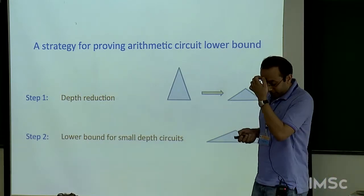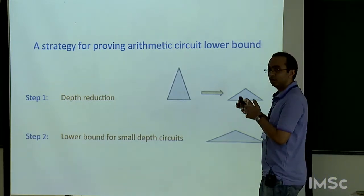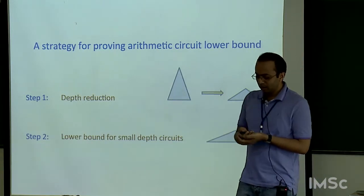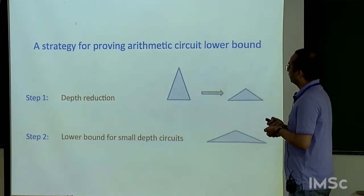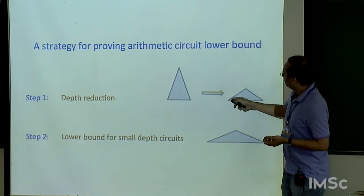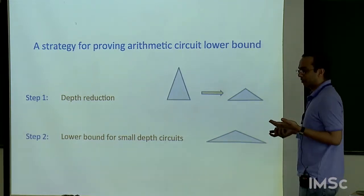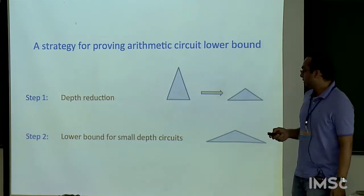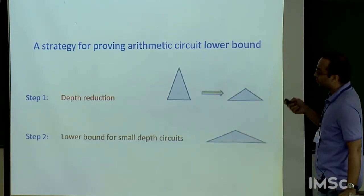All three morning speakers sketched the general strategy of proving lower bounds, but this is not the only strategy. Others include identity testing, the tau conjecture, and geometric complexity theory via representation theory. The main approach is: compress the circuit to a small depth circuit without too much blow-up in size, then show a lower bound for that small depth circuit by exhibiting an explicit polynomial which requires a large such circuit.